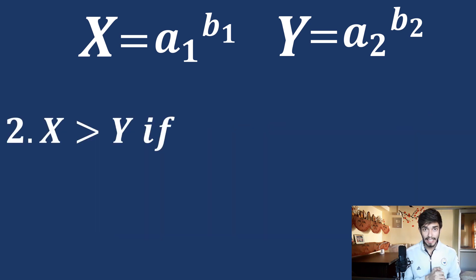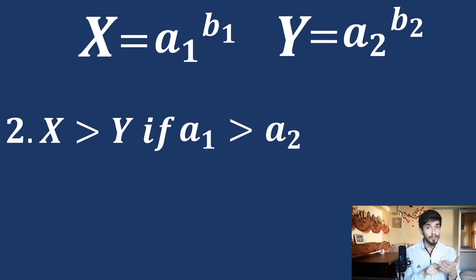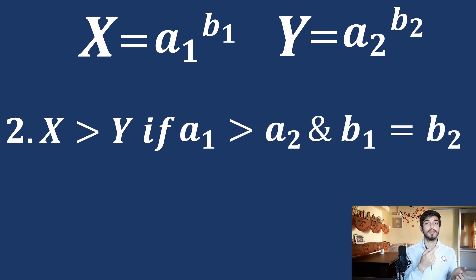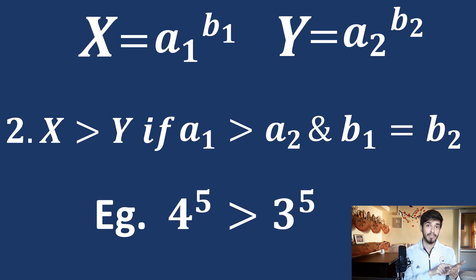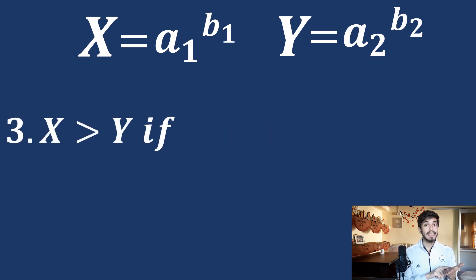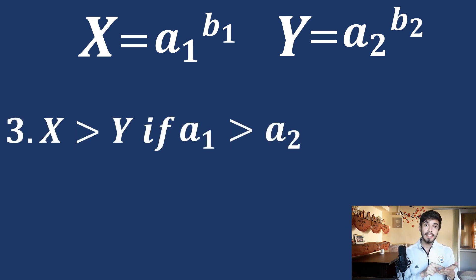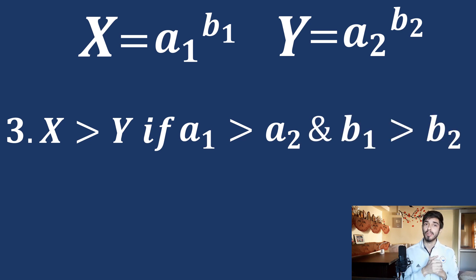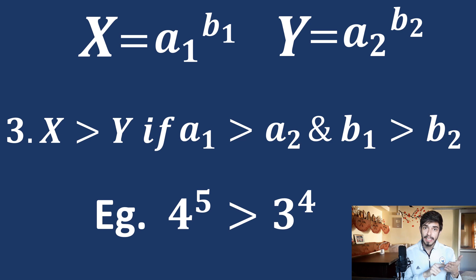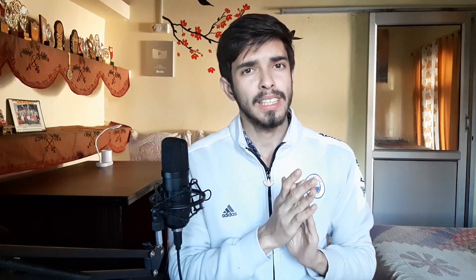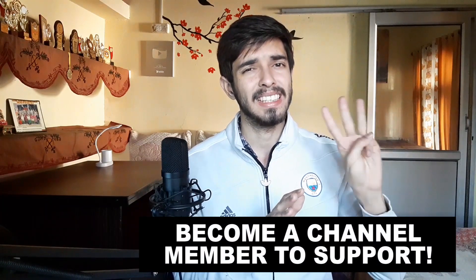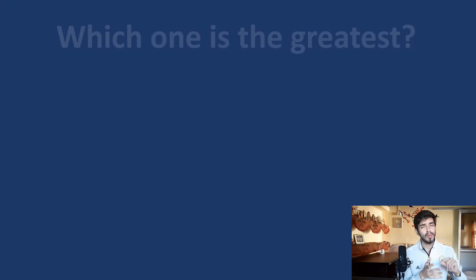Rule 2: x is greater than y if a1 is greater than a2 and b1 equals b2. For example, 4 raised to the power 5 is greater than 3 raised to the power 5. Rule 3: x is greater than y if a1 is greater than a2 and b1 is also greater than b2. For example, 4 raised to the power 5 is greater than 3 raised to the power 4.